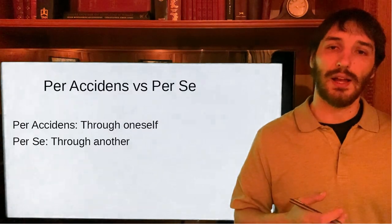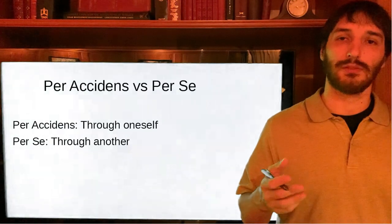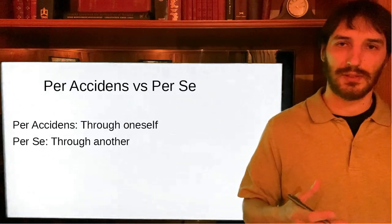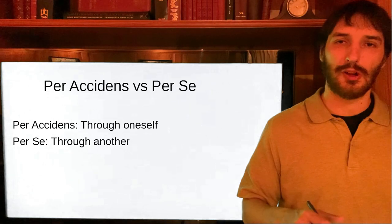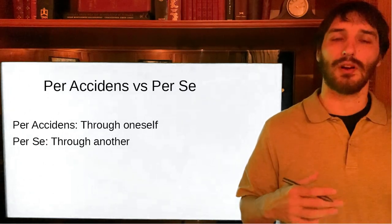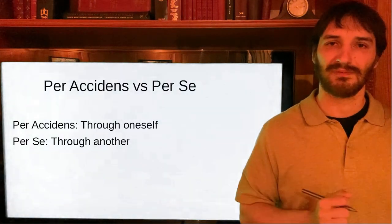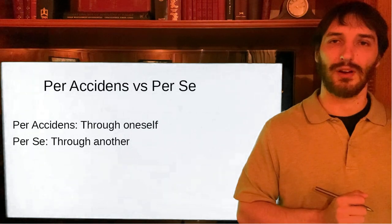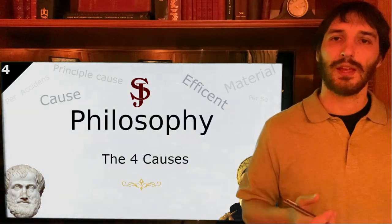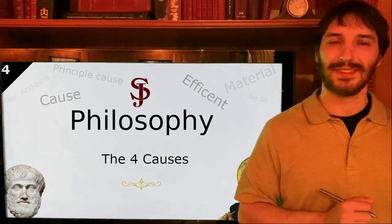So you can see how the idea of per accidens and per se applies to the environment, and that man's obligation to the environment is not to the environment in and of itself, but is ultimately directed toward the good of man. That's it for today's talk. I hope you enjoyed the lecture. If you have any questions, post a comment down below. Have a nice day.